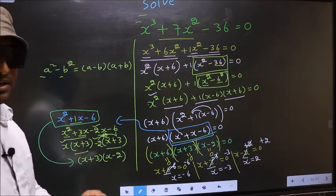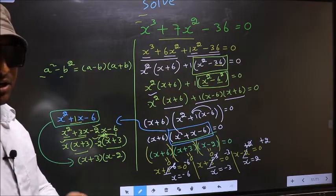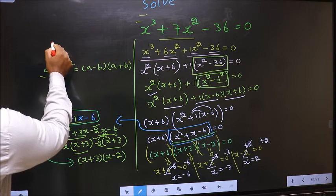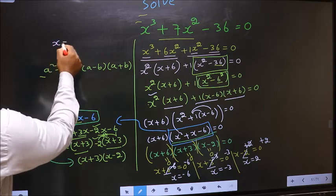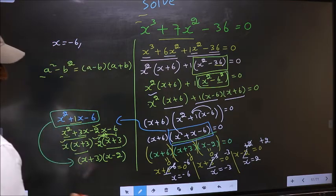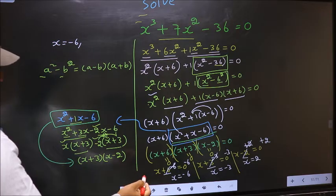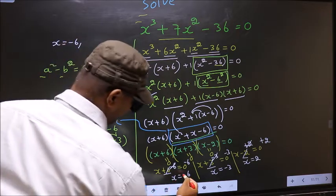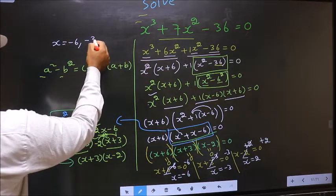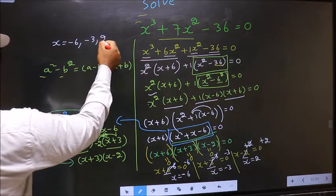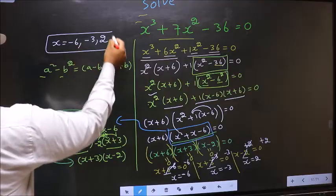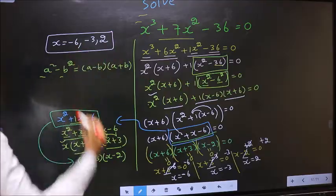The x values that we got are minus 6, minus 3, and 2. This is our answer.